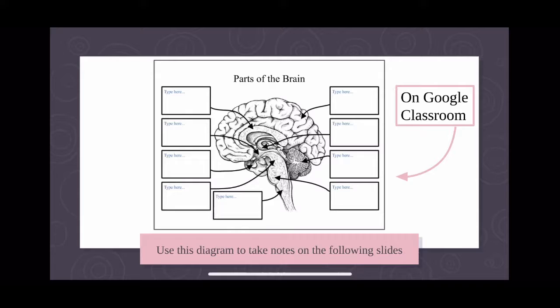For this video, since we are talking about the parts of the brain, you will need to use this diagram that is on Google Classroom. You don't have to, but it's going to be a really great resource to label the different parts that we talk about and take some notes on. So please make sure that you have this open and ready to go. Please make sure that you did open it, go to file, make a copy so that it is editable.